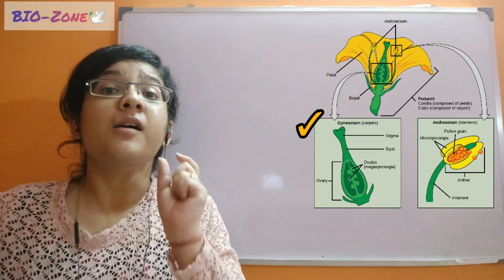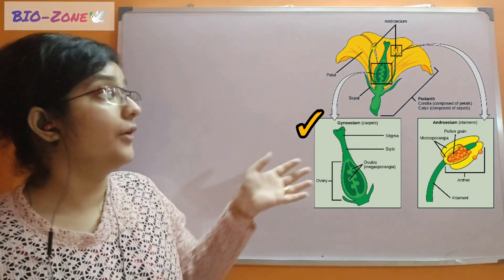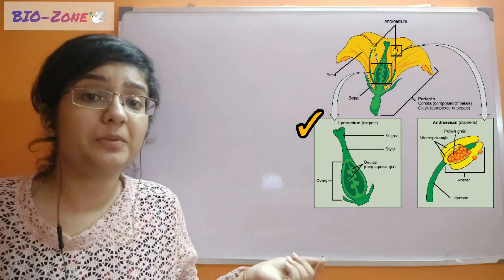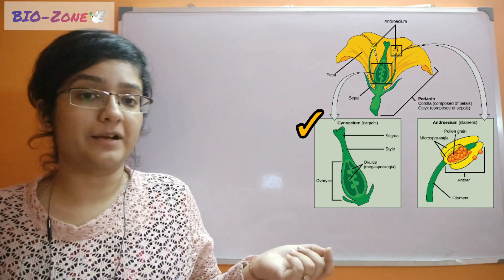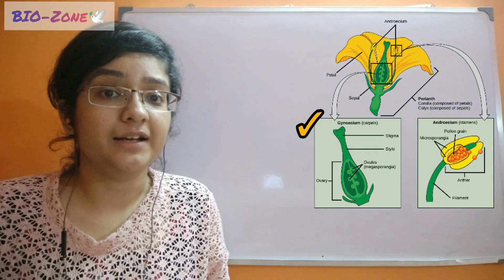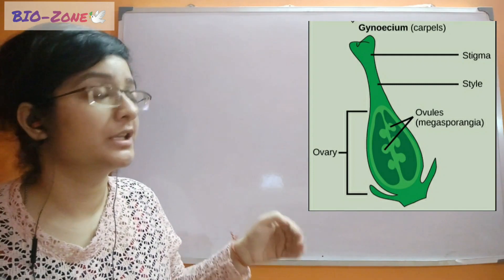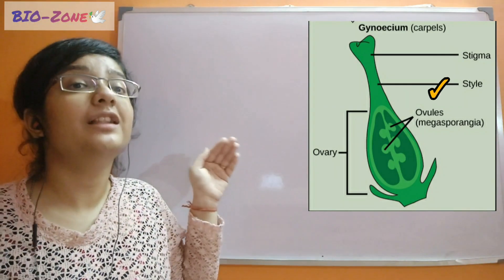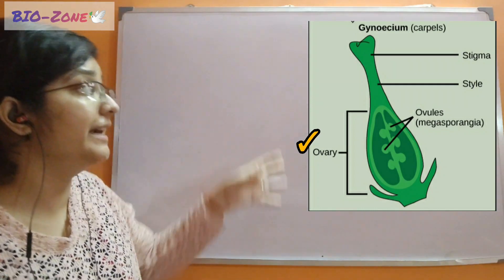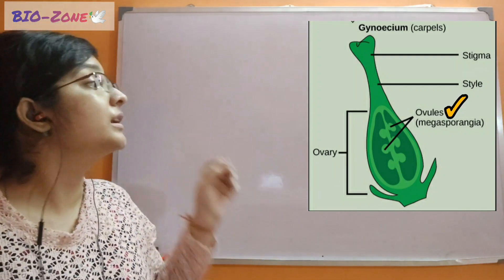Gynoecium — 'gyne' means the female's house or the women's house — so this is the female part of the flower. It is made up of carpels. There may be one carpel, called a monocarpellary flower, or several carpels, called a multicarpellary flower. A carpel is made up of three portions: the first is called the stigma, the second is called the style, and the last portion is called the ovary. Inside the ovary you can see it contains the egg cell.